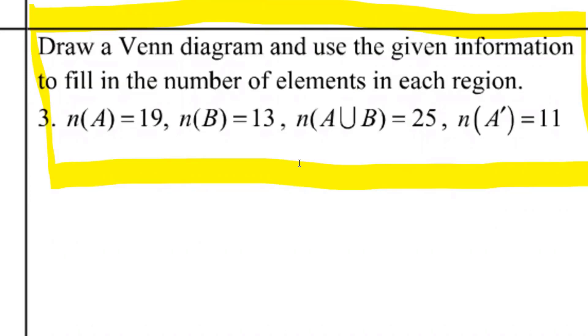Draw a Venn diagram and use the given information to fill in the number of elements in each region. The number of elements in A is 19, the number in B is 13, the number in A union B is 25, and the number in A complement is 11.